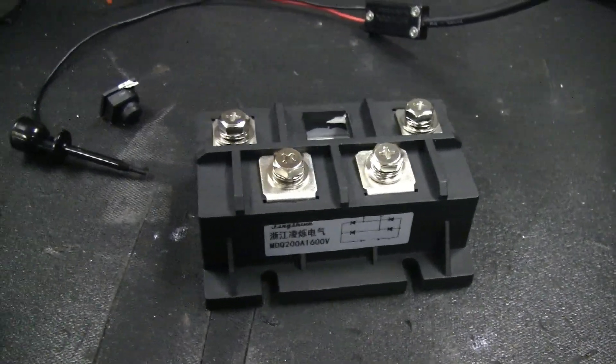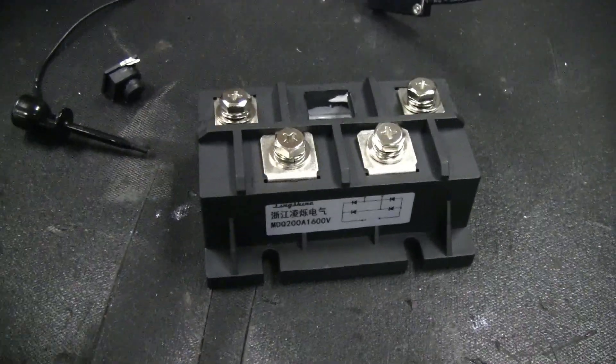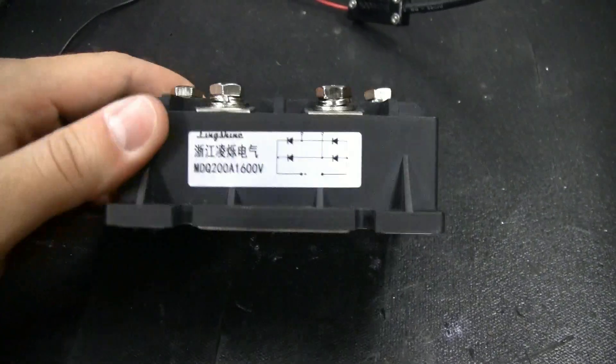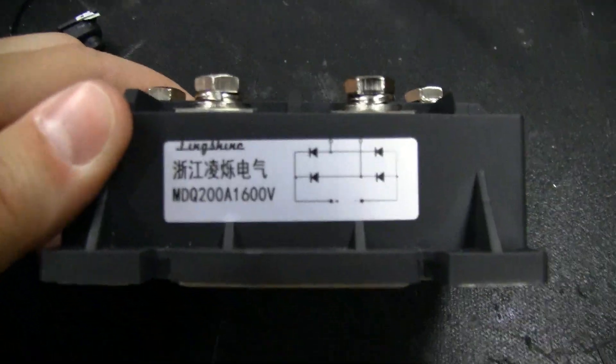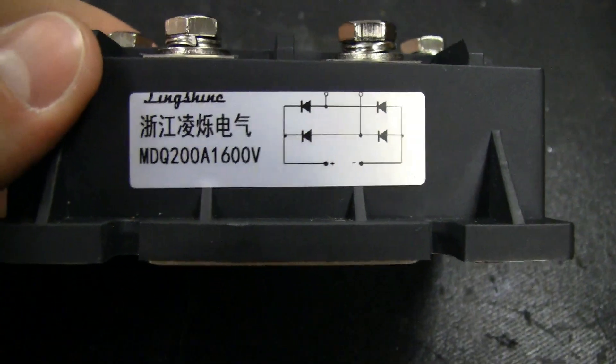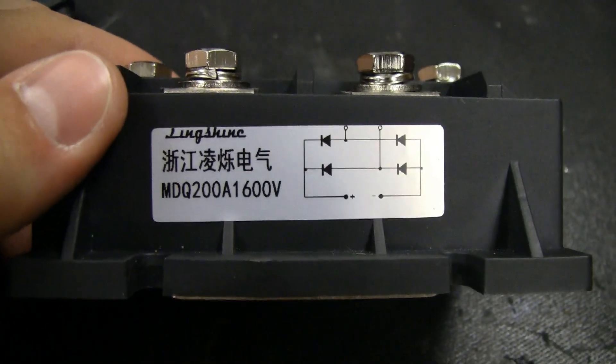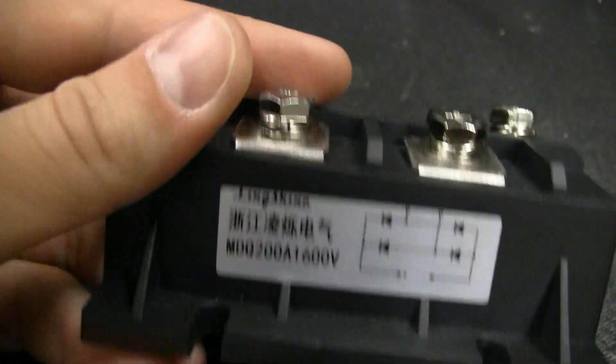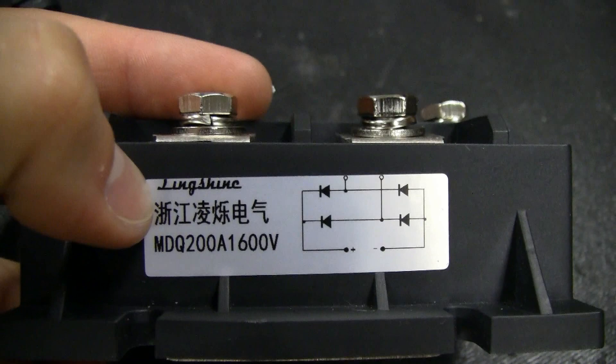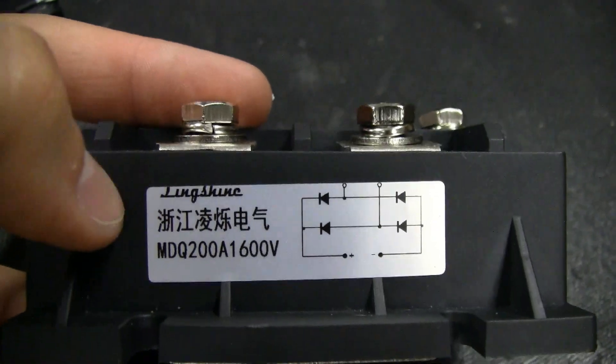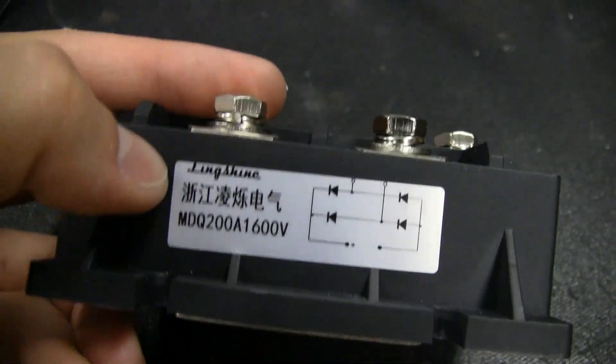Hey everyone, welcome back to the Microwave Lab. Today we're going to look at this gadget that I got. This is a 200 amp bridge rectifier. And you can see here it's MDQ200A1600V, and brand is Lingshine. A little bit off on the printing of the sticker there.